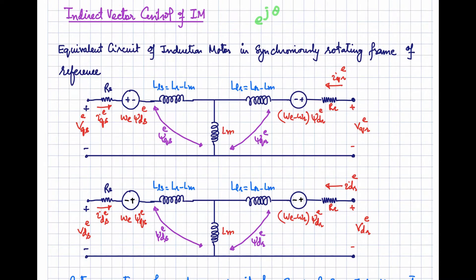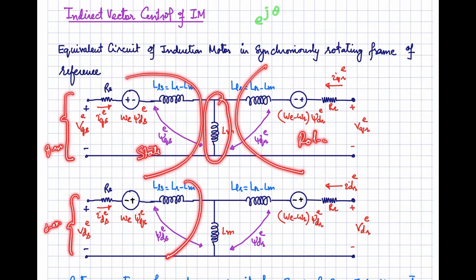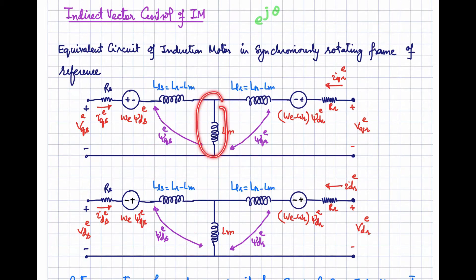We discussed the voltage and current model in detail, so in this video we will address indirect vector control. The equivalent circuit of the induction motor in the synchronously rotating frame of reference is shown here — this is the Q axis circuit and this is the D axis circuit. The stator side is represented in the Q and D axis, and this represents the rotor side, with the common mutual inductance between stator and rotor.